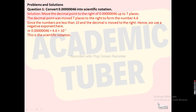Solved example: Convert 0.00000046 into scientific notation. We have to move the decimal point to the right of 0.00000046 up to the 7th place. The decimal point was moved 7 places to the right to form the number 4.6. Since the number is less than 1 and the decimal is moved to the right, we use a negative exponent. Therefore, 0.00000046 = 4.6 × 10⁻⁷. This is the scientific notation.